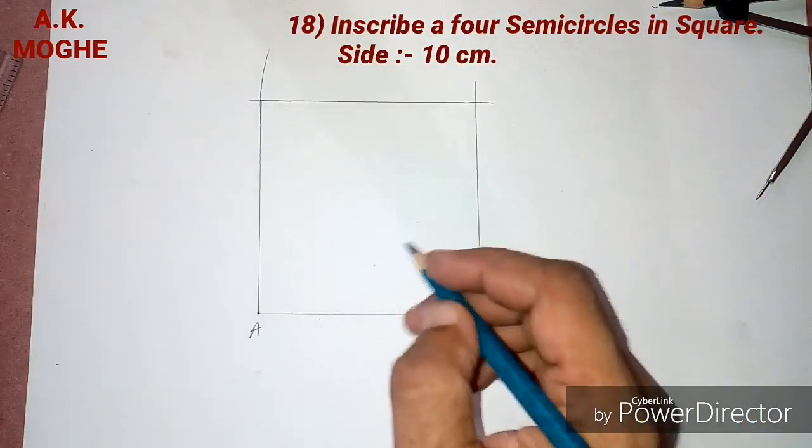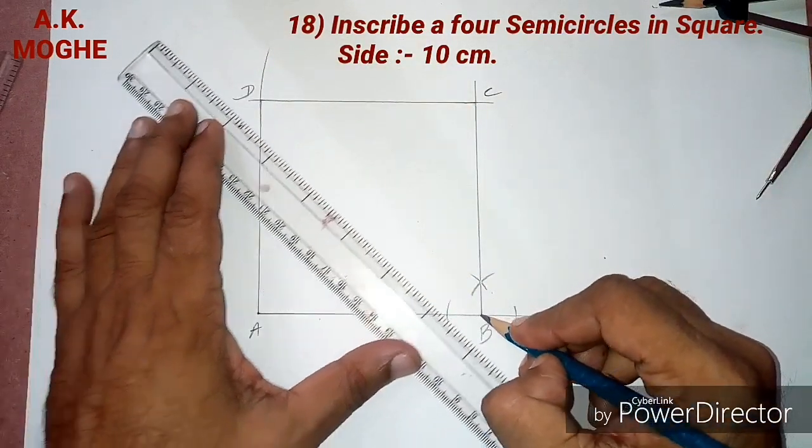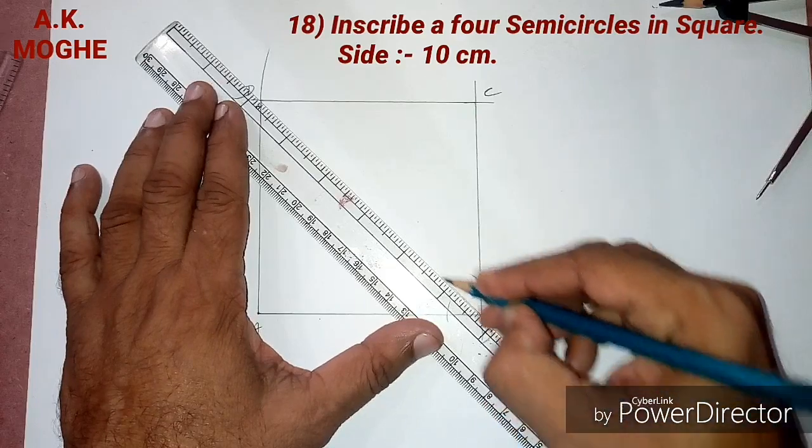The next step is to join the corners of the square. So we don't need to bisect each and every angle of the square into two equal parts.